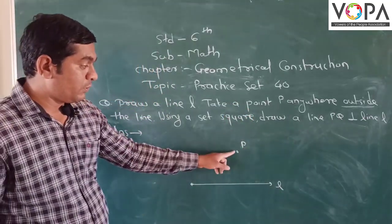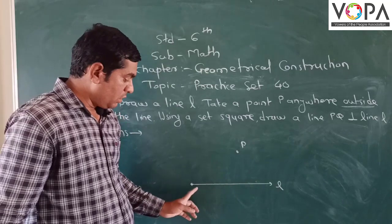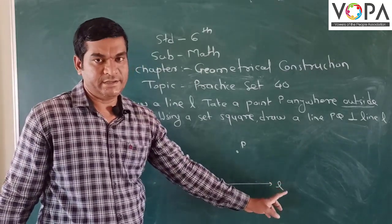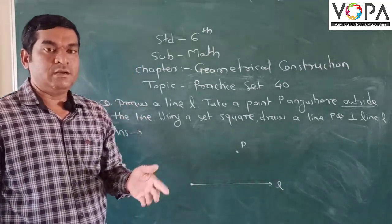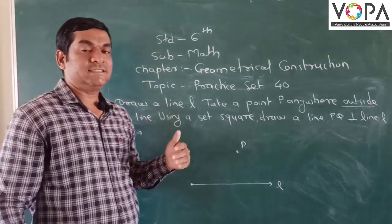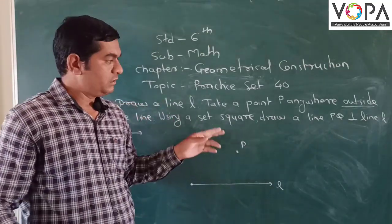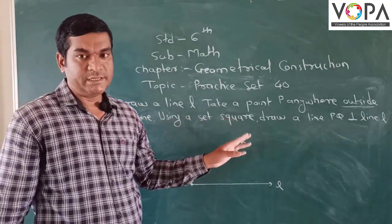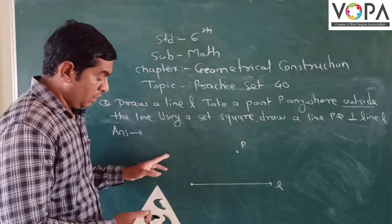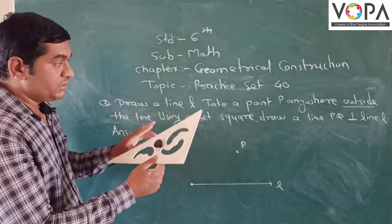And from point P, we want to draw a perpendicular to the line. In last examples or in last videos, we found what is a perpendicular. It's a right angle. How we construct that? By using the set square.